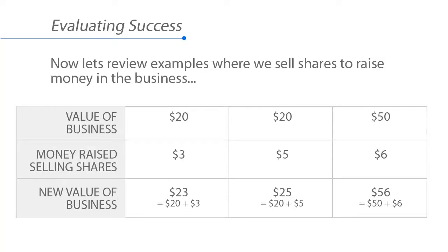Now let's review examples where we sell shares to raise money in the business, as opposed to selling products. If the value of the business is $20 and we sell shares or ownership in the business and receive $3 for that share of ownership, then the new value in the business is $20 plus $3, so the new value is now $23.